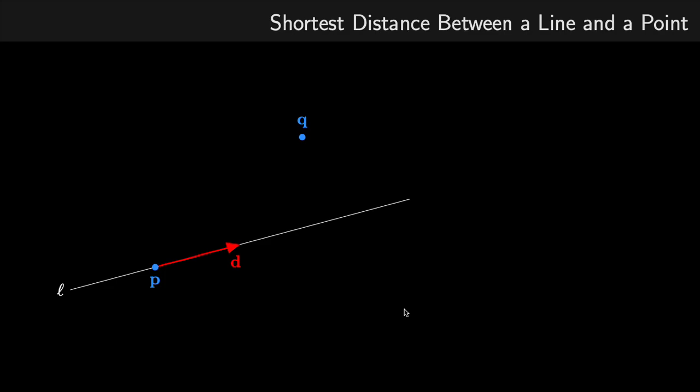In this video, I'm going to talk about how we can solve some shortest distance problems in vector geometry. These are some common problems that can exist, and the first one I'm going to look at is the shortest distance between a point and a line.